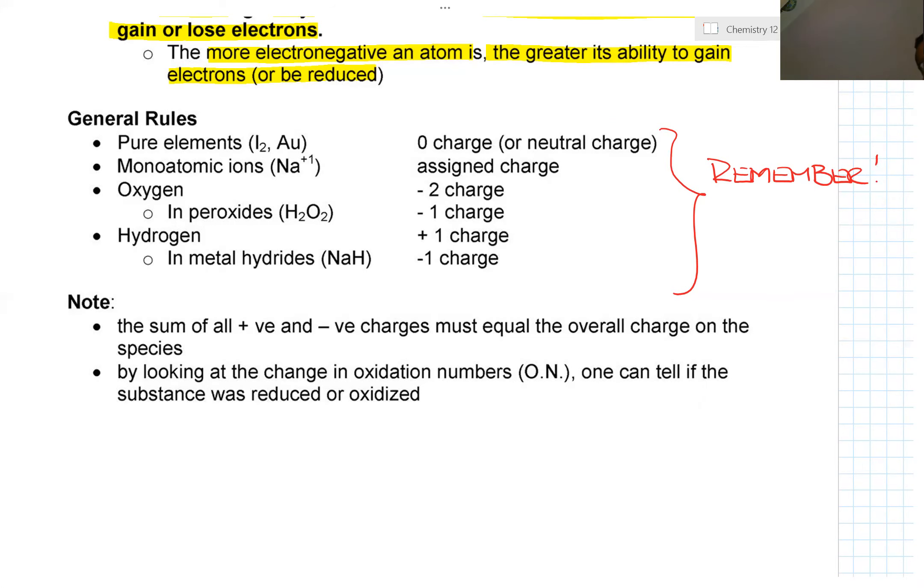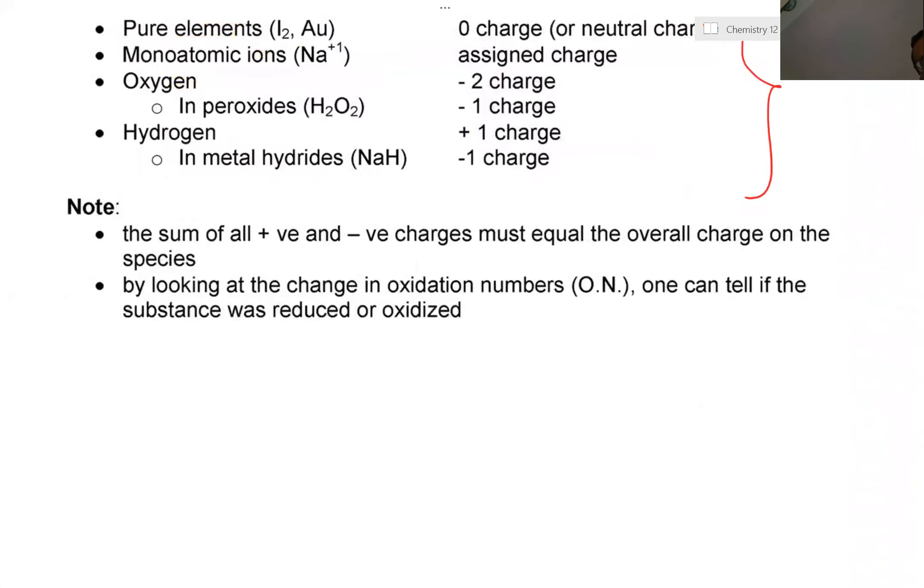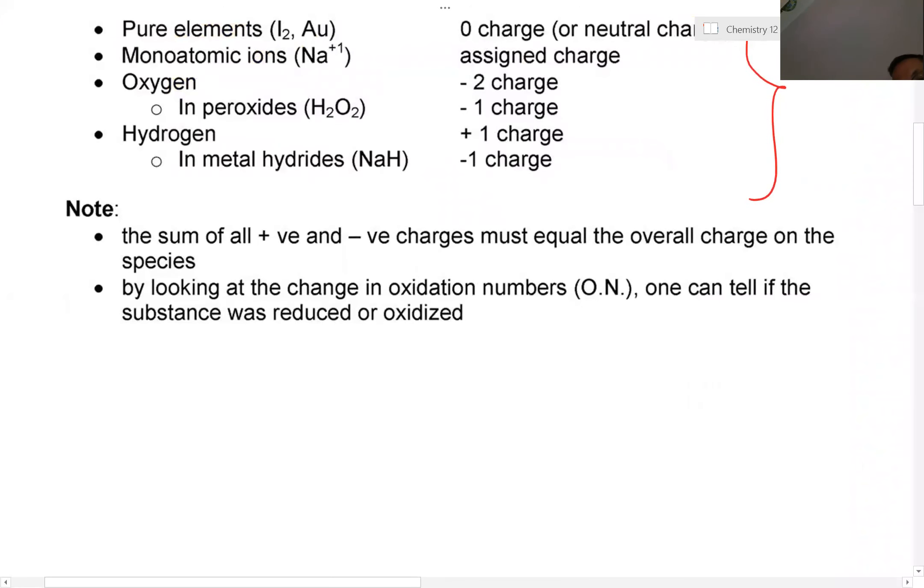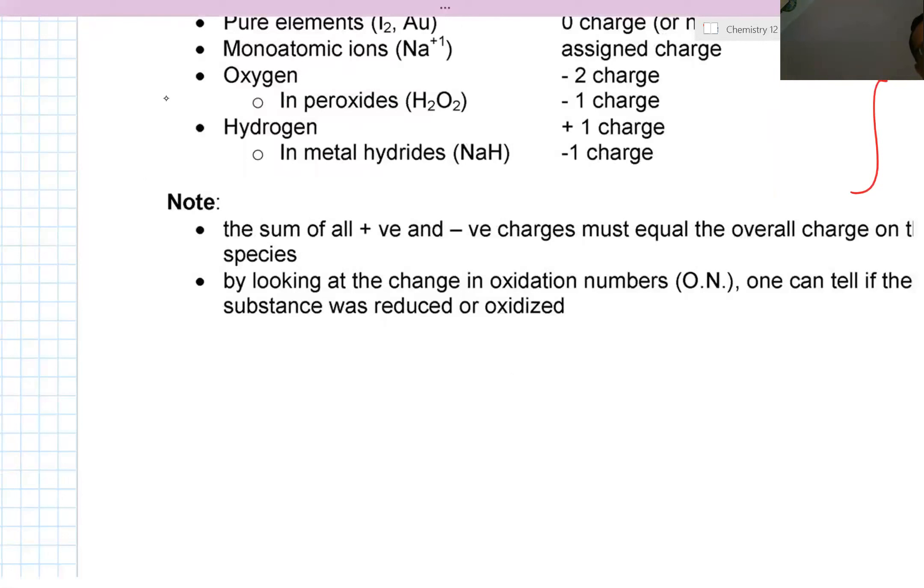Now a couple of key things you should be aware of. The sum of all the positive and negative charges must equal the overall charge in the species. And by looking at the change in oxidation numbers, one can tell whether or not a substance was reduced or oxidized. Now what I'm going to do is I'm going to break it down into A and B.